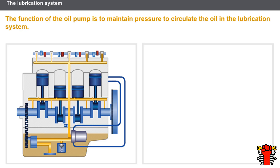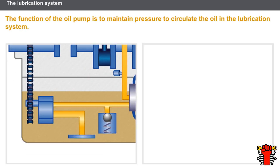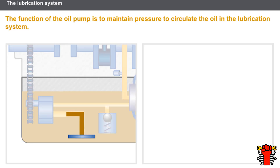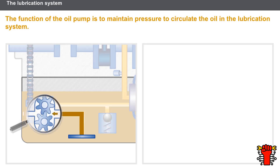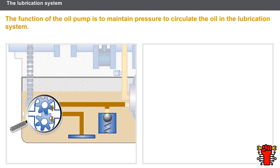The oil pump circulates the oil under pressure. It is made up of the following components: a strainer submerged in the oil pan that pumps the oil, a gear wheel for oil circulation and pressurization, and a release valve to limit the oil pressure.